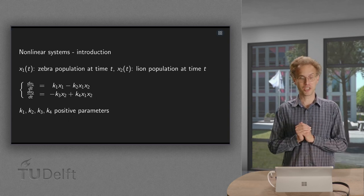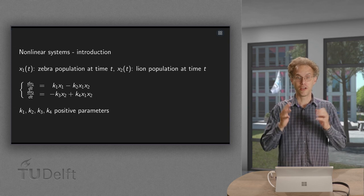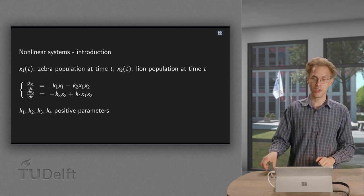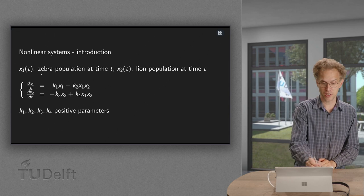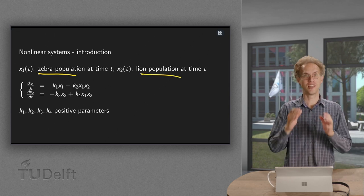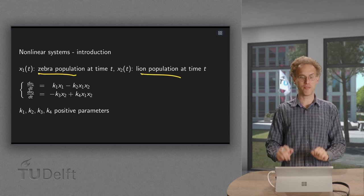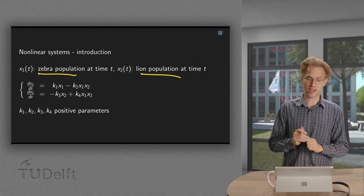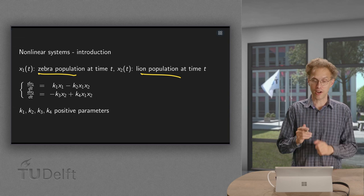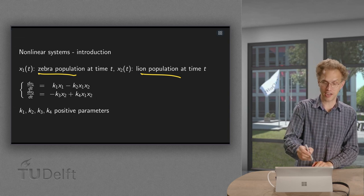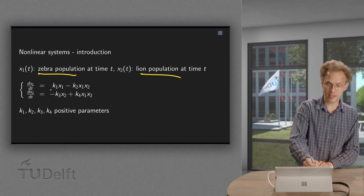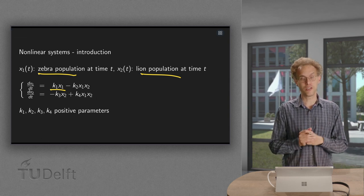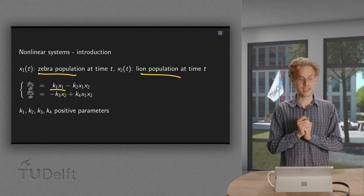First application from biology, a heavily simplified one. Suppose we have a population of zebras and lions, and that's it. Now what happens with our zebra population? Well, if there are no lions present, they are happy and they grow: dx/dt equals k times x1, where k is some parameter.